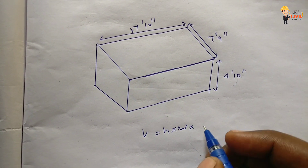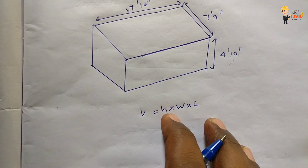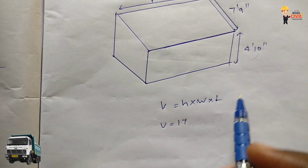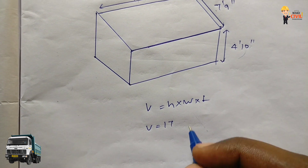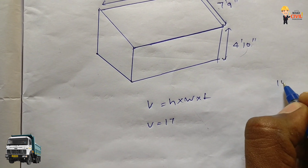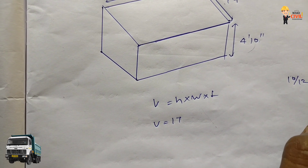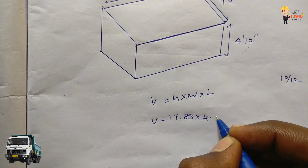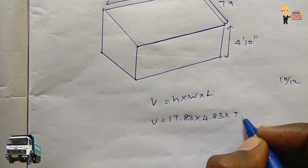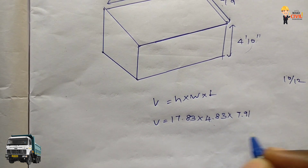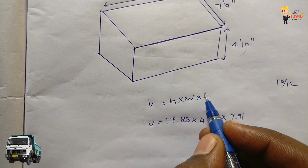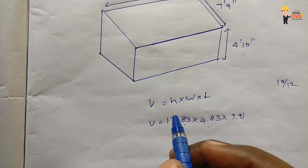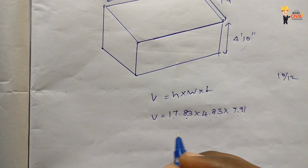We have length, width, and height, so we multiply them to get the volume. We calculate 10 divided by 12 inches. The width is 4 inches, and another width is 7 inches. The length is 17 inches, width is 4 inches, height is about 8 inches.